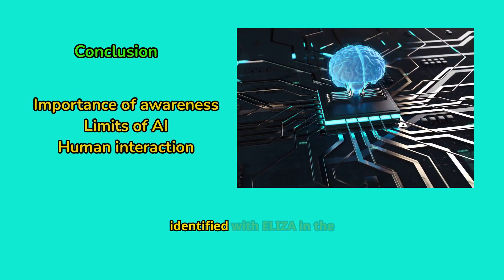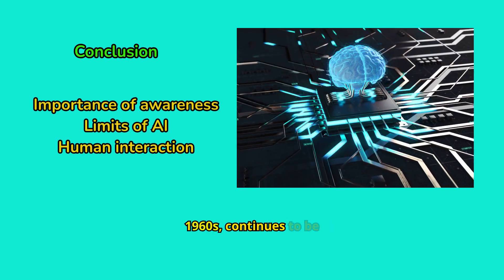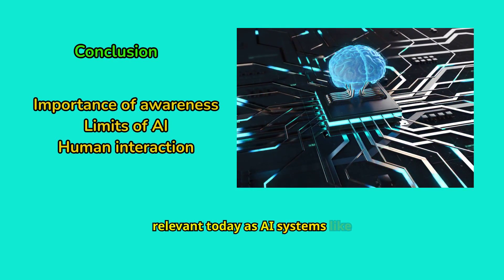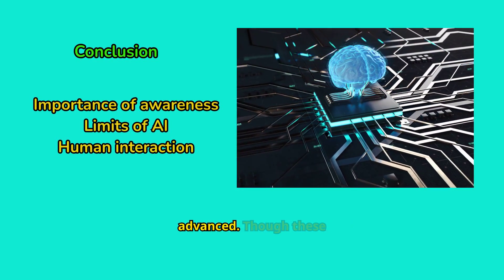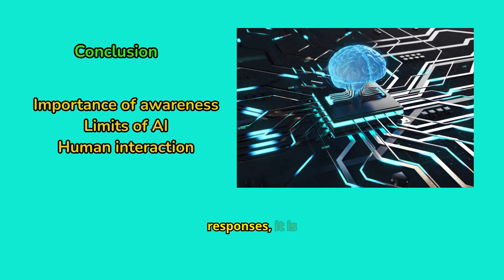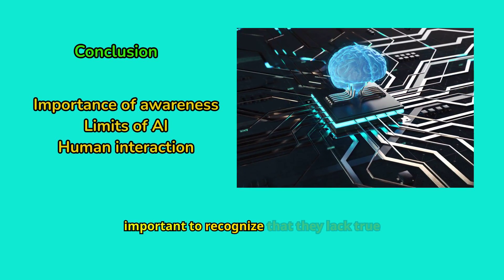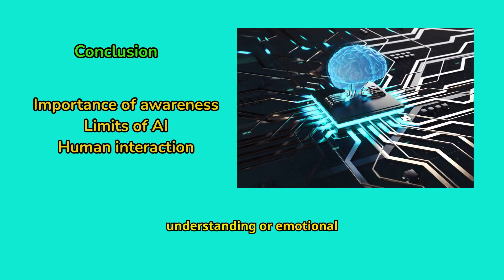The ELISA effect, first identified with ELISA in the 1960s, continues to be relevant today as AI systems like ChatGPT grow more advanced. Though these systems can generate human-like responses, it is important to recognize that they lack true understanding or emotional intelligence.